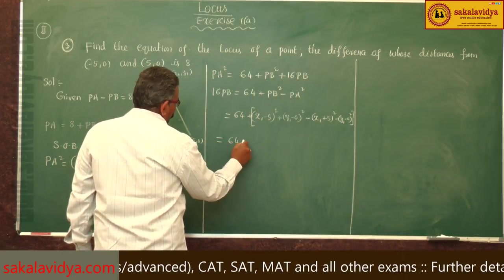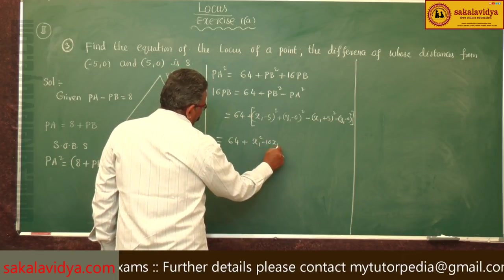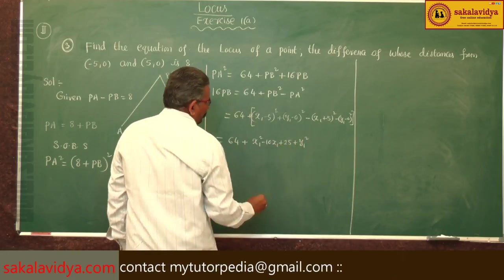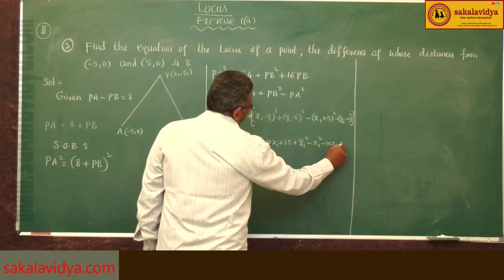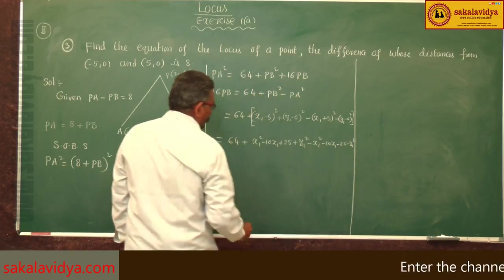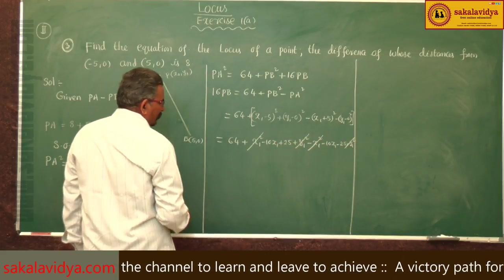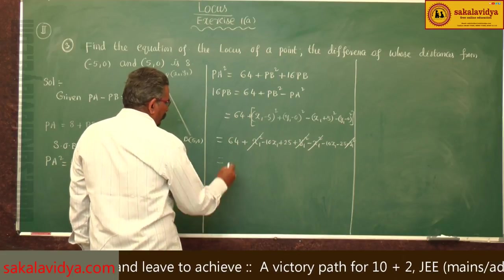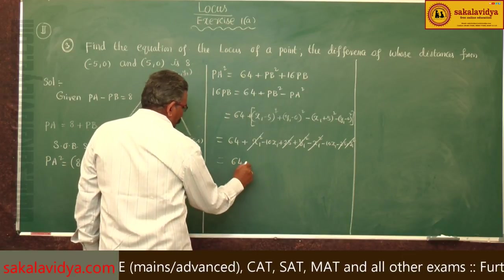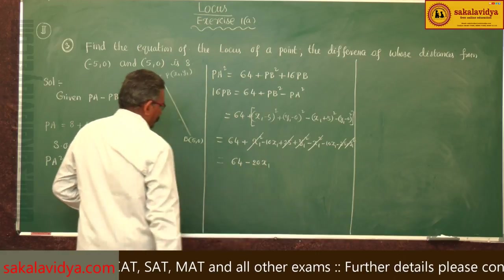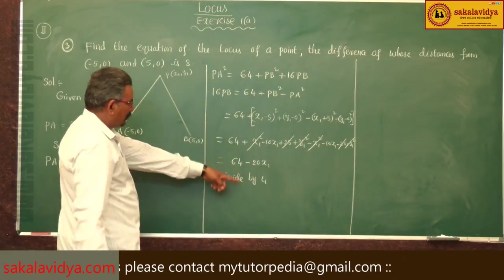We get: 64 plus (x1 squared minus 10x1 plus 25 plus y1 squared) minus (x1 squared plus 10x1 plus 25 plus y1 squared). Here, x1 squared and x1 squared cancel. y1 squared and y1 squared cancel. The 25 and 25 also get cancelled.